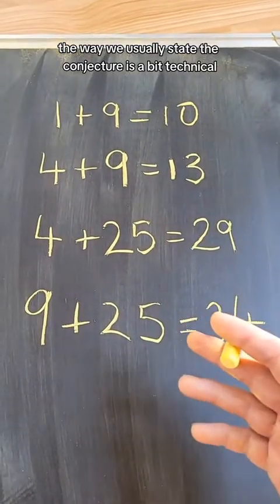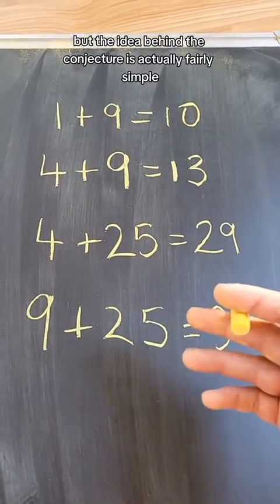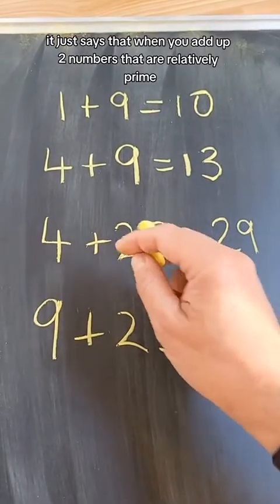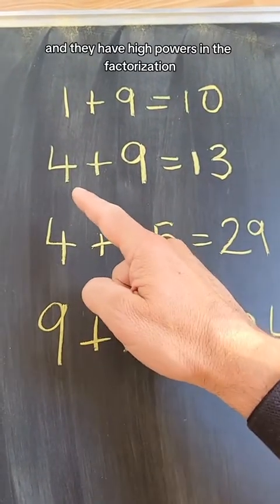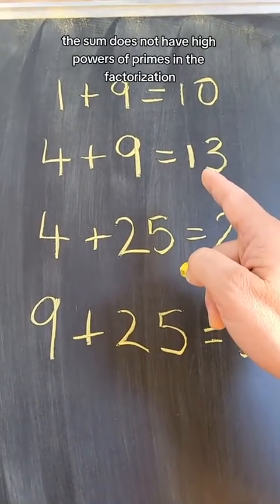The way we usually state the conjecture is a bit technical, but the idea behind the conjecture is actually fairly simple. It just says that when you add up two numbers that are relatively prime and they have high powers in the factorization, the sum does not have high powers of primes in the factorization.